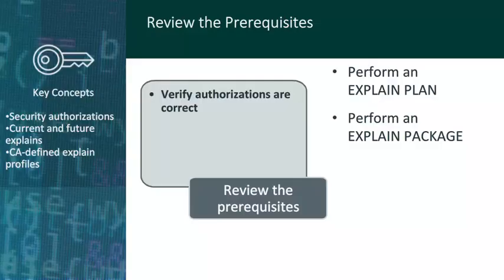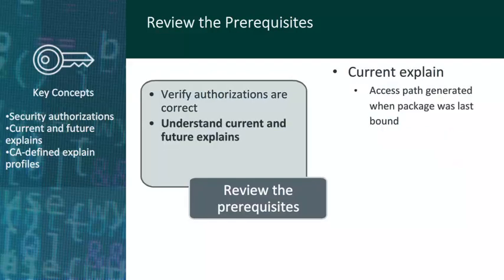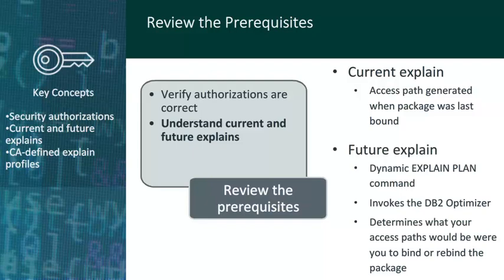Lynn verifies that she has the security authorizations to perform this process. For this use case, Lynn requires authorization to perform an explain plan and an explain package. CA Plan Analyzer detects access path changes by using the current explain results as a baseline and comparing these against the future explain results. The current explain uses the access path created by the DB2 optimizer and written to the explain tables when the package was last bound. The future explain executes a dynamic explain command which invokes the DB2 optimizer to determine what access paths would be were you to bind or rebind the package right now. The product then compares the current and future explain results and generates the compare reports.